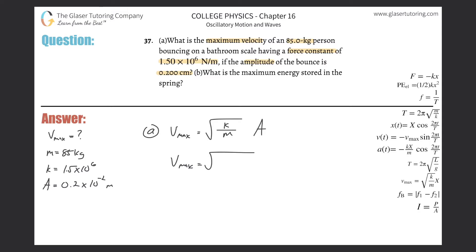V_max equals square root: k was 1.5 times 10 to the 6th, the mass was 85 kilograms, and the amplitude was 0.2 centimeters, which we need in meters: 0.2 times 10 to the minus 2. Let's plug that into the calculator.